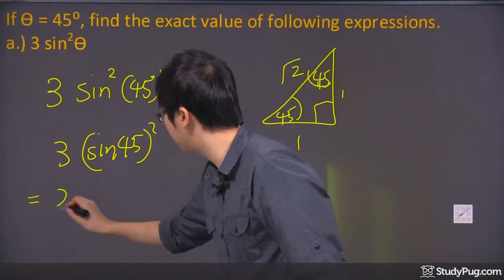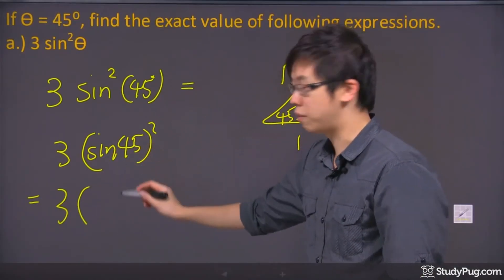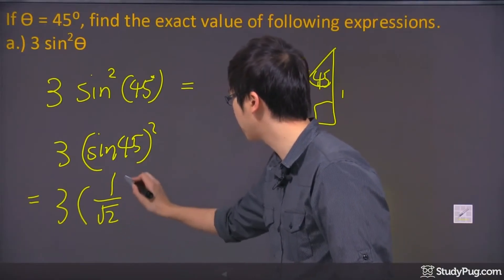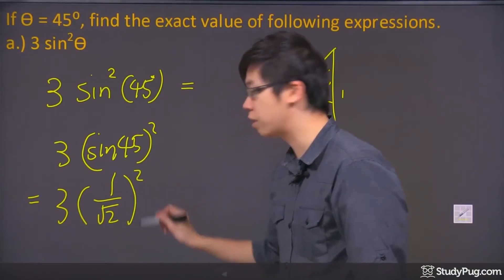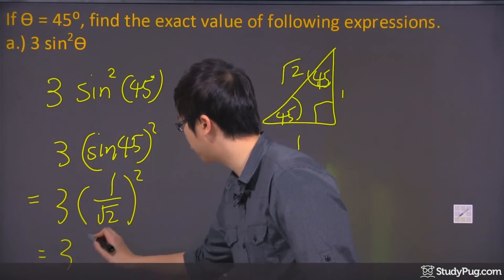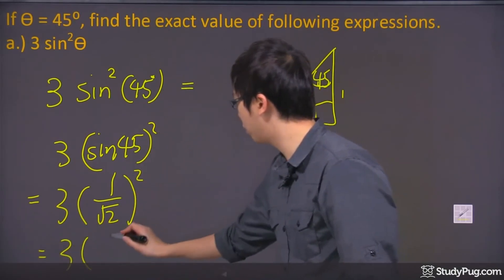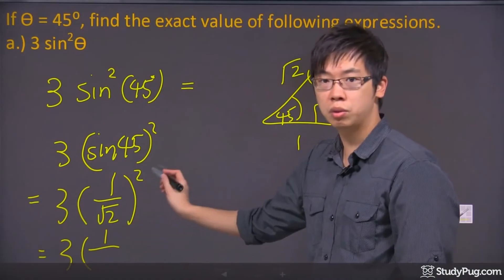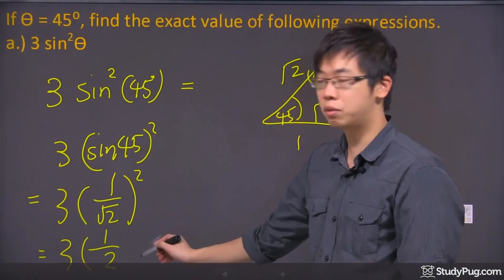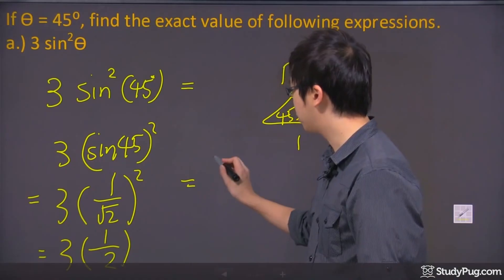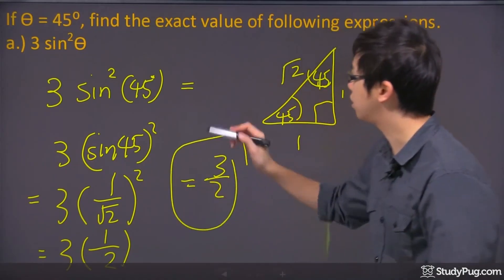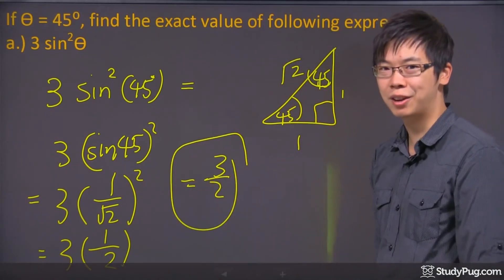So sine of 45 is just 1 over root 2, and then you square that. If you square the 1 you get 1, and if you take root 2 and square it, you get 2. So 3 times 1 over 2 gives a final answer of 3 over 2. That is your final answer for this one. Thanks for watching.